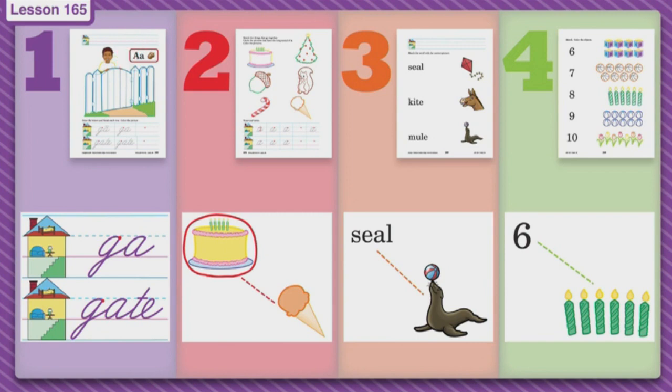So a long A says what? A. Good job. So in the first line you're going to make the blend GA, G and A together, and then you will make your very own. Then you're going to go to the second one and you will make the word gate on both dots and then you'll make your very own, and then you can color your picture.